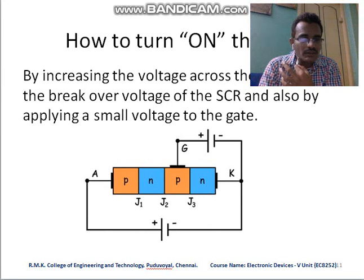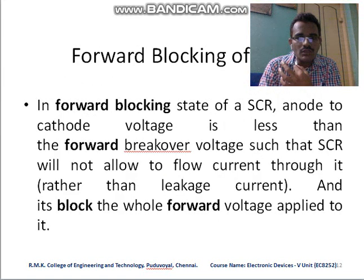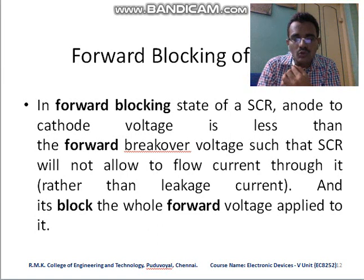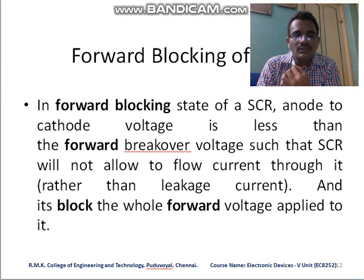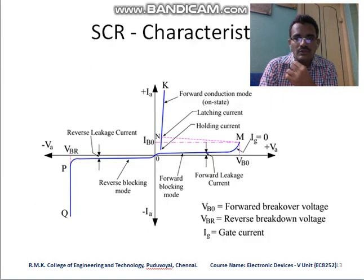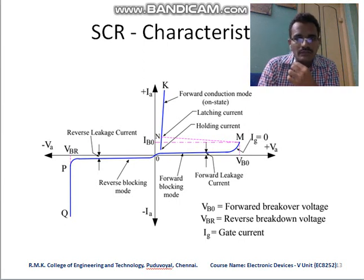In the forward blocking mode of the SCR, the anode-cathode voltage is less than the forward breakover voltage, so the SCR does not allow current to flow through it. The operation of the SCR becomes clearer by examining its characteristic curve.